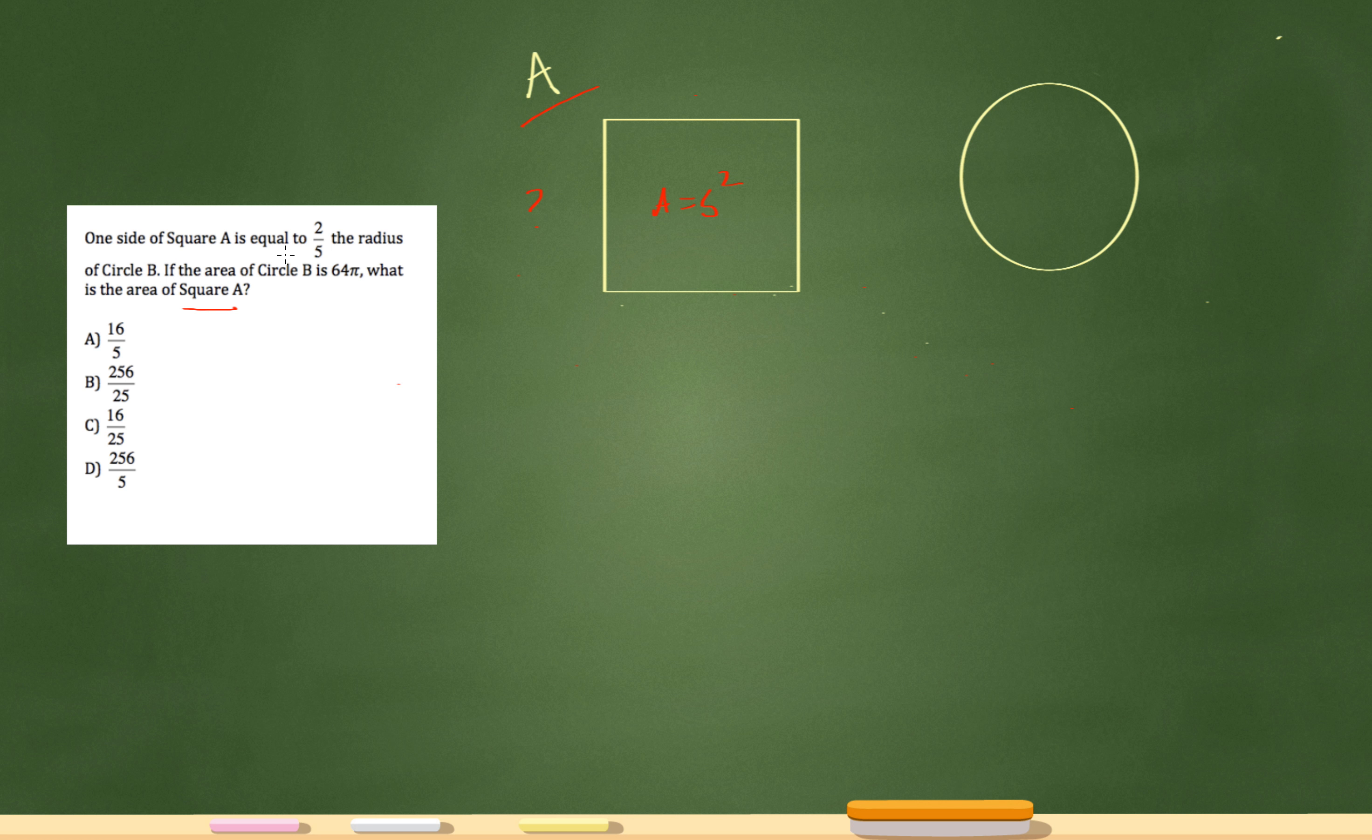The problem tells me that one side of the square A is equal to two-fifths of the radius of circle B. Okay, so I need to figure out the radius of circle B right here.